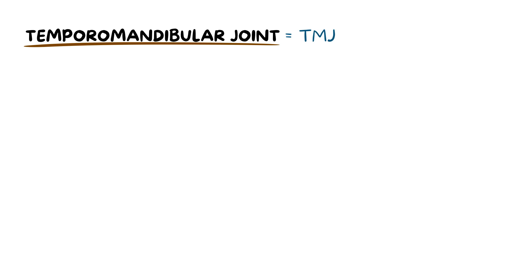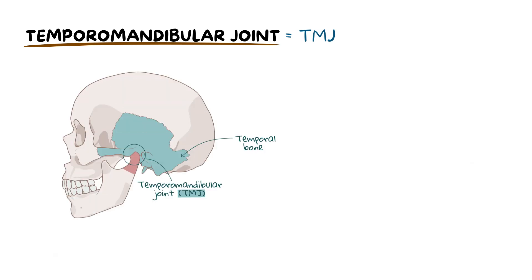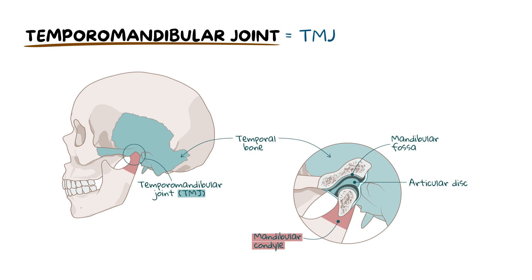The temporomandibular joint, or TMJ, connects the temporal bone of the cranium to the condyle of the mandible. An articulating disc is in between the condyle of the mandible and the mandibular fossa of the temporal bone. It aims to create smooth movement, distribute pressure, and maintain the synovial fluid. A capsule covers the TMJ and aims to limit movements and prevent dislocation.